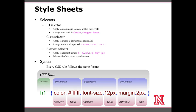The next declaration has a property of font-size and the value of 12 pixels, setting the h1 font size to 12 pixels. The third declaration is for margin, setting a value of 2 pixels on the h1 margin. The whole thing together — selector and declarations included within the brackets — creates a CSS rule. Don't get confused between the differences between rules, declarations, and properties.